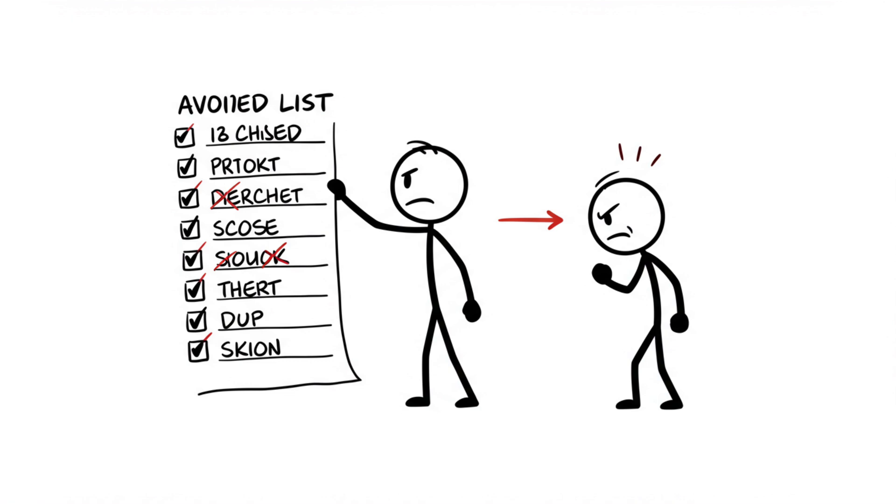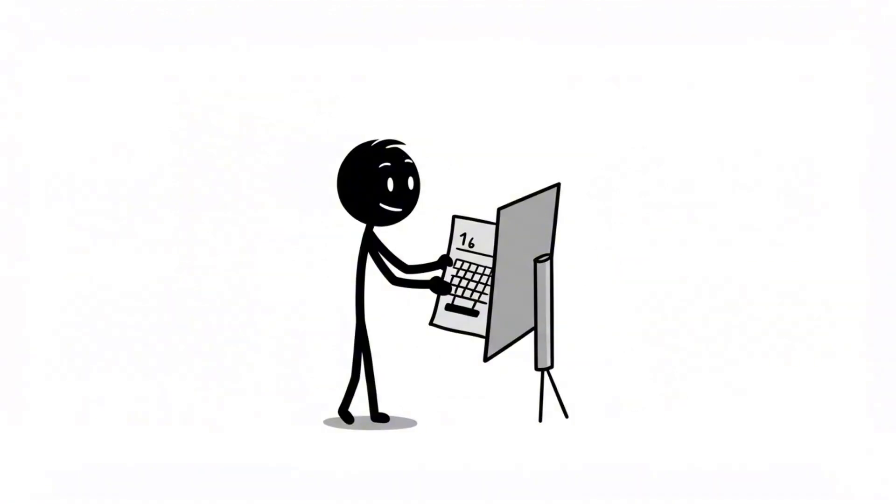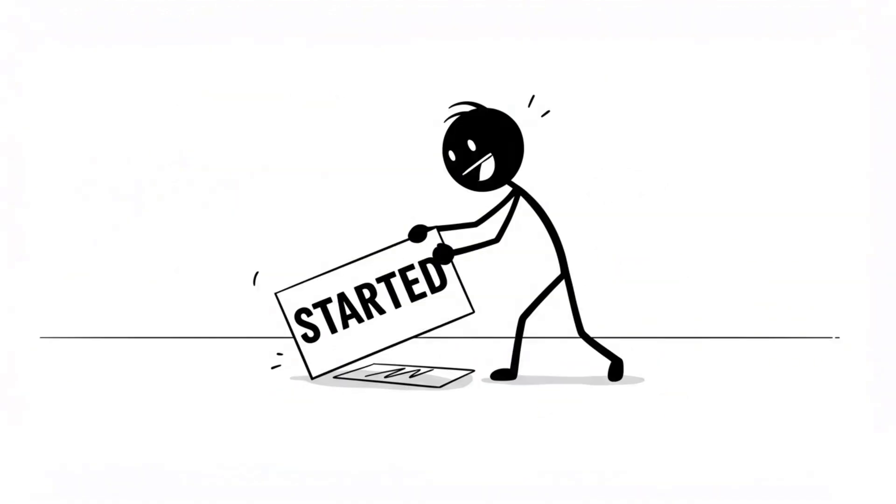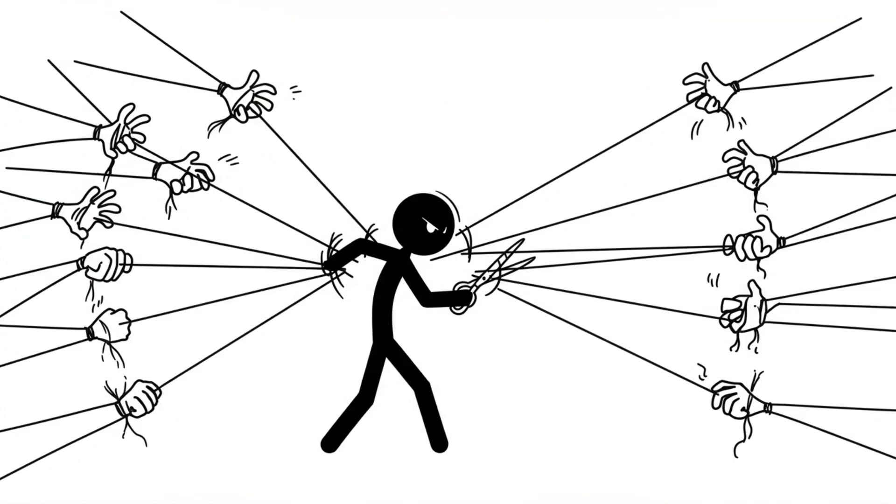Pick one task you've been avoiding, open it, do one tiny action, then drop a comment saying started, so I know you took control.